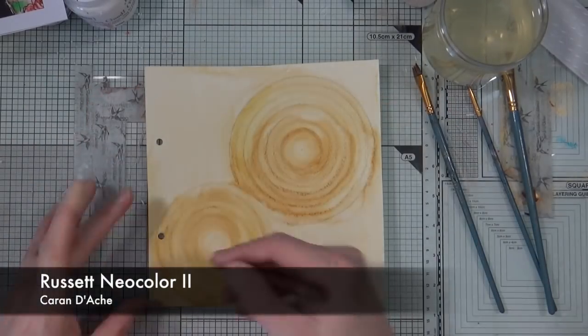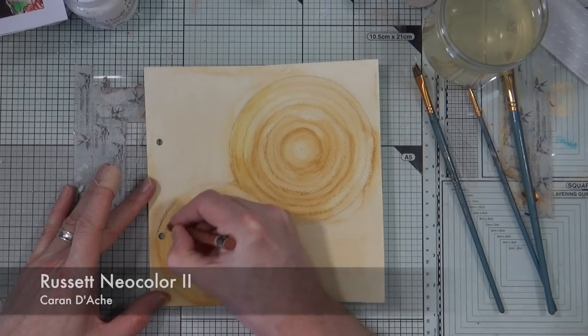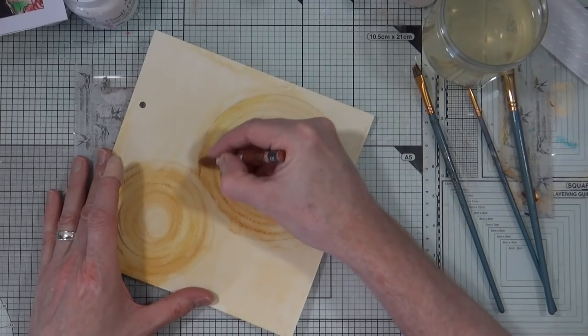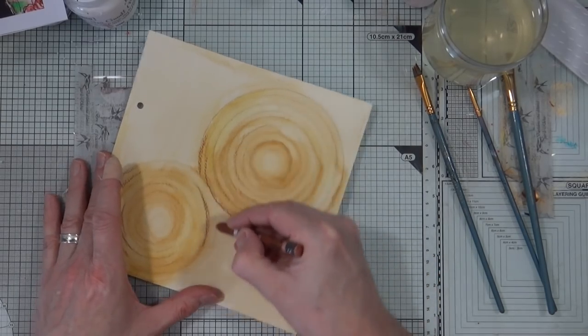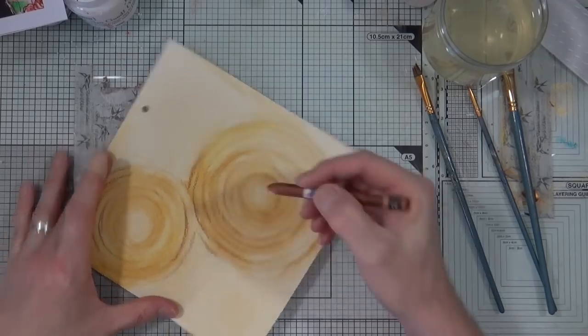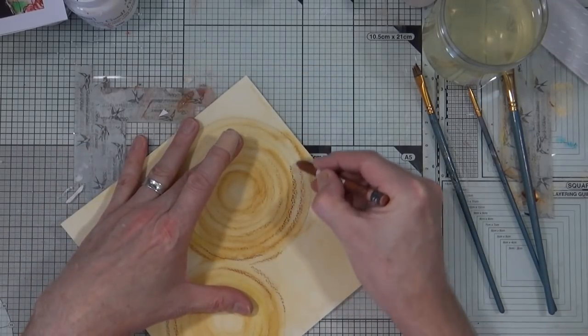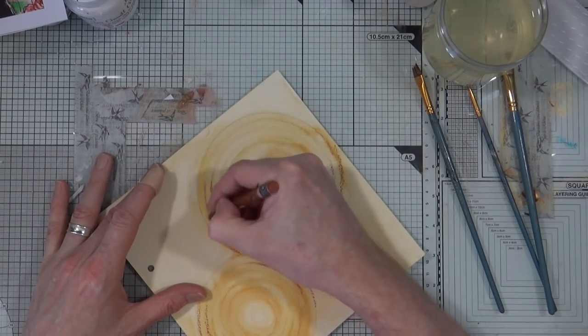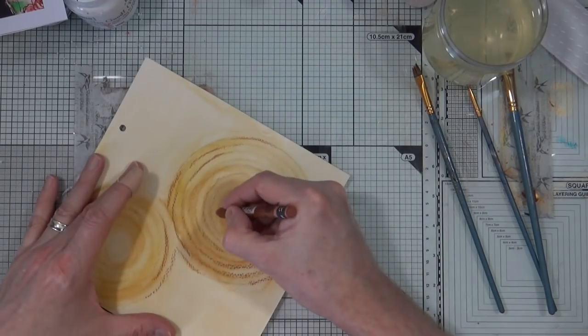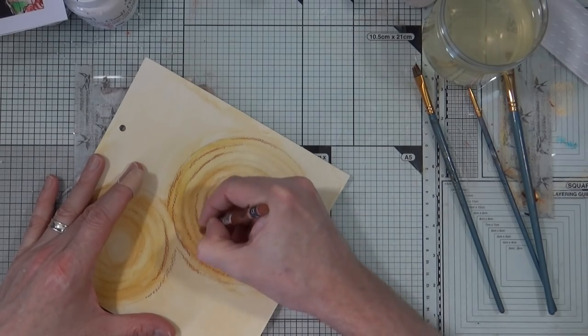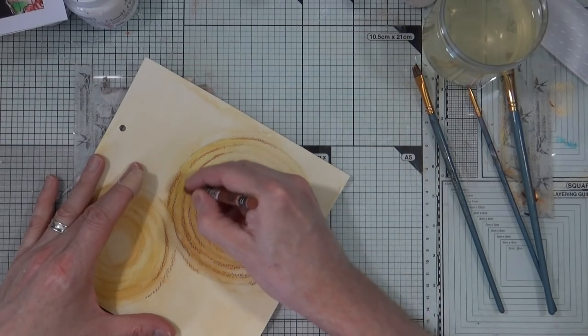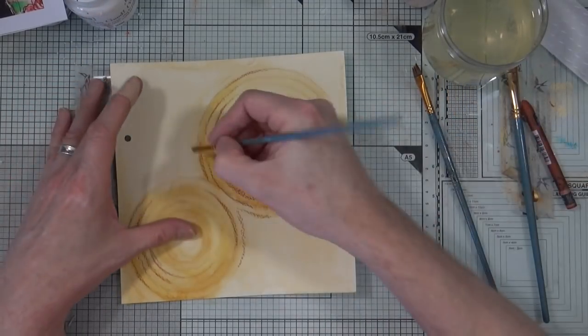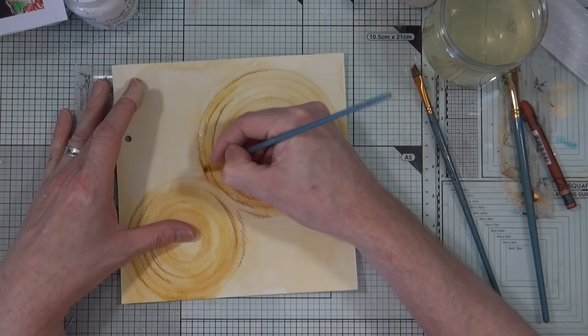The next color is a little bit darker this time, this is Russet which is a kind of orangey brown. I'm going to go around some of the areas on the circle, not wholly this time. I just want to create some kind of shadows and highlights with the yellow that I've done and then some low lights and some shadows with the darker orangey brown. Again I'm just going to activate those with water using a small detail brush.